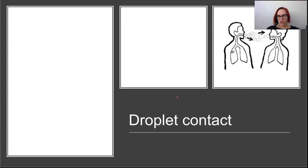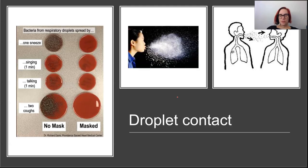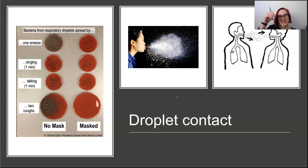Droplet contact occurs when infected droplets make contact with your eyes, nose, and mouth. There's discussion around whether we need to wear masks or even safety goggles. These droplets are water-based and they settle very quickly as they're quite large. Measles is an example of this type of transmission.